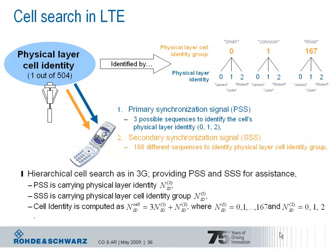Aligning the physical layer identity with the most common first names — for example, James, John, and Robert — these two types of information are transmitted using the primary and secondary synchronization signals. The primary synchronization signal contains the physical layer identity (the first name), and the secondary synchronization signal contains the physical layer cell identity group (the surname). The cell's identity is computed via a modulo-3 operation: multiplying the group identity by 3 and adding the physical layer identity.